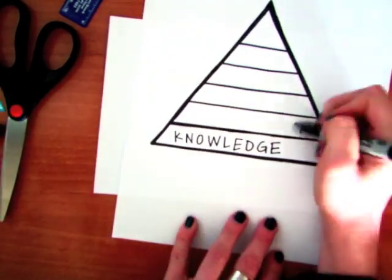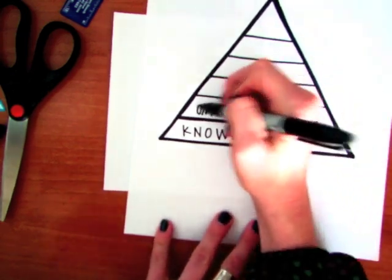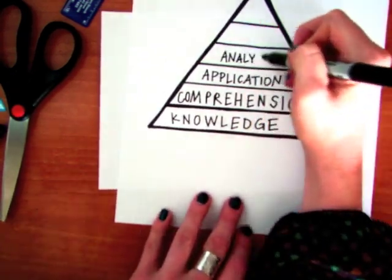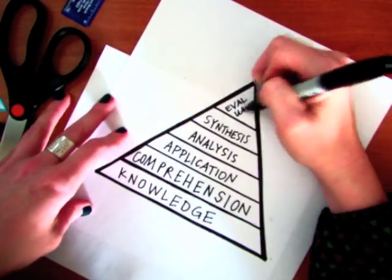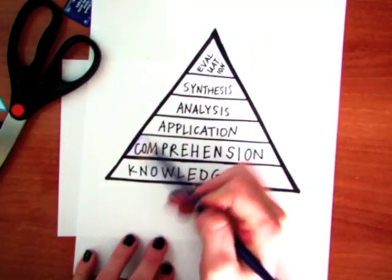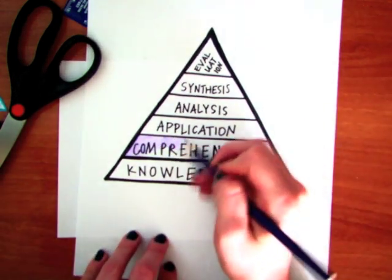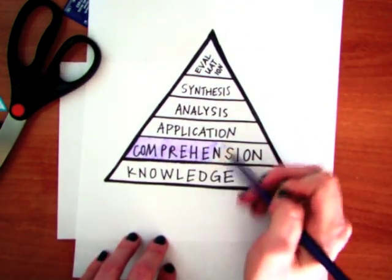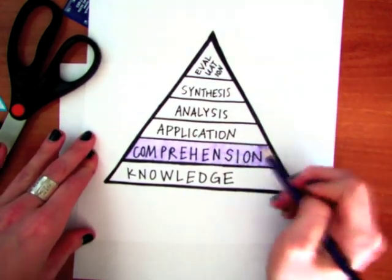Bloom's Taxonomy is a framework that helps teachers categorize educational objectives and increase the rigor of their questioning. It's also sometimes used as an evaluative tool for course objectives and assessments to make sure that teachers are challenging their students above the level of mere factual recall.